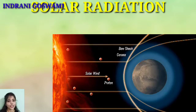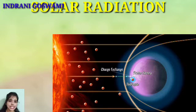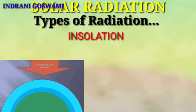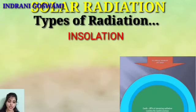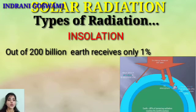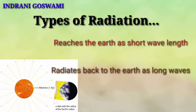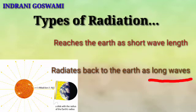The next topic is the types of radiation. These are: number one, insolation, and number two, terrestrial radiation. What is insolation? The amount of solar radiation received by the Earth is known as insolation. The sun's energy reaches the Earth as a short wave — this is an important objective question. When it radiates back to space, it forms long waves.